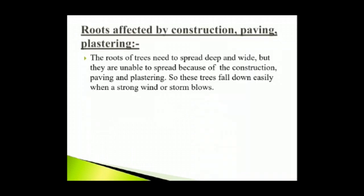Roots affected by construction, paving and plastering: In towns and cities, constant work in concrete construction goes on. Pavements are paved and plastering is carried out. The roots of trees need to spread deep and wide, but they are unable to spread because of the construction, paving and plastering. So these trees fall down easily when a strong wind or storm blows.